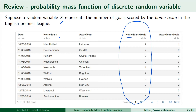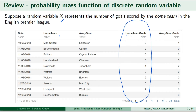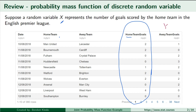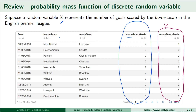Let the random variable Y represent the number of goals scored by the team playing away — away from their own stadium — by the end of regulation. You can view the distribution of goals by the home team and the distribution of goals by the away team separately.